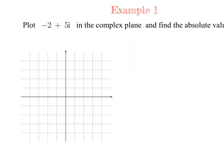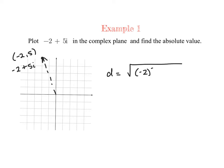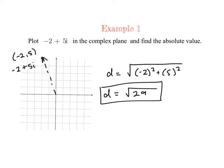Let's start by trying this problem. We are going to plot the complex number negative 2 plus 5i. Our real number is negative 2 and our imaginary number is 5, so it's going to be at the coordinate (-2, 5), right up here. This can also be represented as a vector. Then we're going to find the absolute value using the distance formula: the square root of negative 2 squared plus 5 squared, which gives us the square root of 29. So that is the absolute value or the modulus of this complex number.